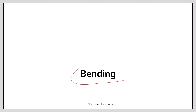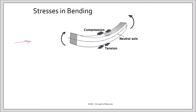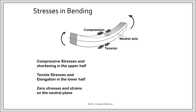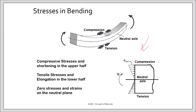In this video we will talk about bending. In the figure you see a beam with bending moments applied. On the upper surface there is compression, on the lower surface tension, and strains and stresses are developing. Somewhere between these two areas there is an axis or a plane which is neutral — that means where the stress and strain are zero. In summary: compression and shortening in the upper half, tensile and elongation in the lower half.